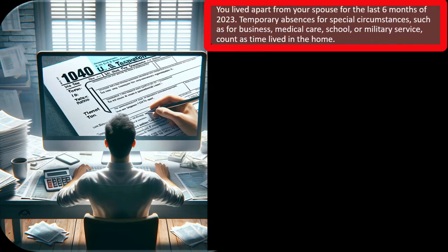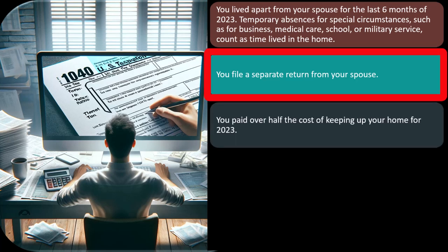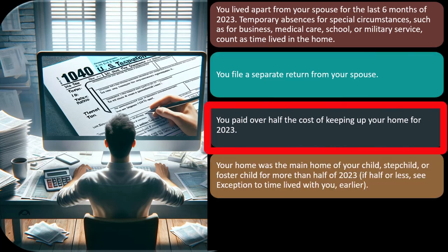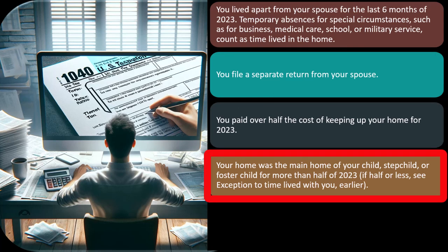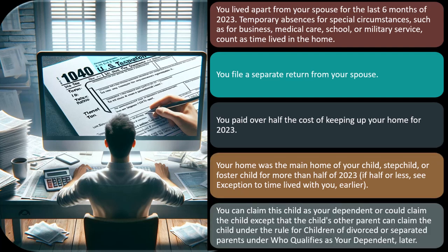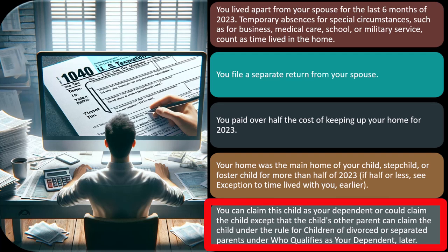The conditions for being considered unmarried include: you lived apart from your spouse for the last six months of 2023 (temporary absences for business, medical care, school, or military service count as time lived in the home); you filed a separate return from your spouse; you paid over half the cost of keeping up your home for 2023; and your home was the main home for your child, stepchild, or foster child for more than half of 2023.